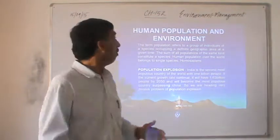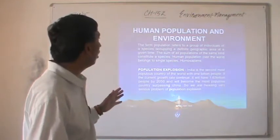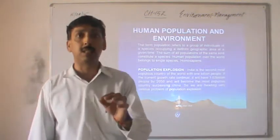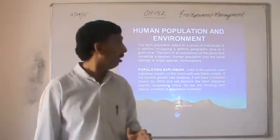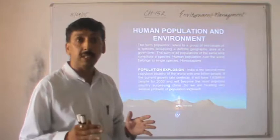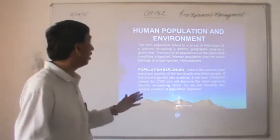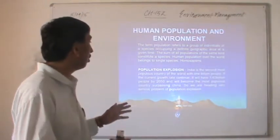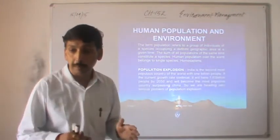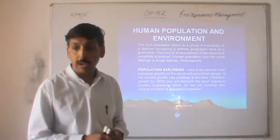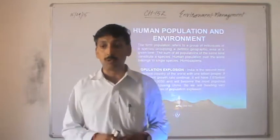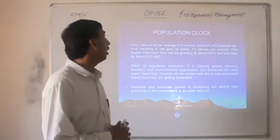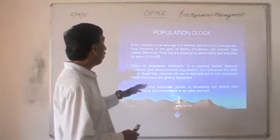In this chapter we will discuss about the major effect of population on human life, on plant life, and on the environment. Now let us discuss the term population explosion. If we compare the statistics of India with other countries, we see that India is the second most populous country of the world after China. If this current growth rate continues, it will have 1.63 billion people by 2050 and will be the most populous country, surpassing China. There is another term known as population clock.